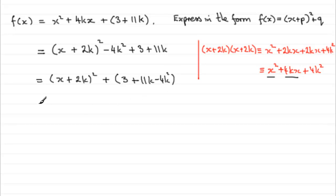So you can see that this is identical to saying x plus p all squared plus q, where we've got p is equal to the 2k, and you can see that q is equal to the 3 plus 11k minus 4k squared.